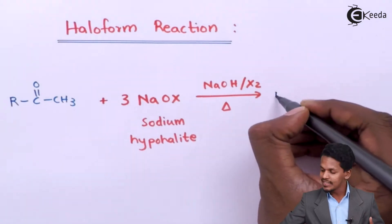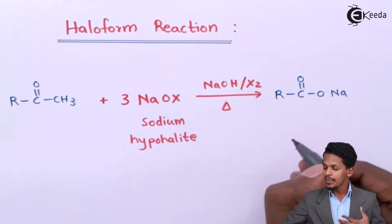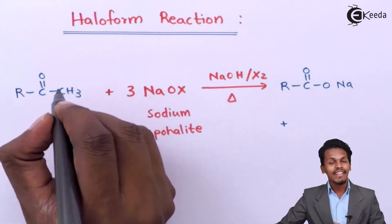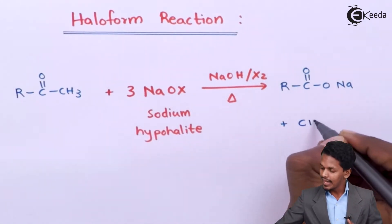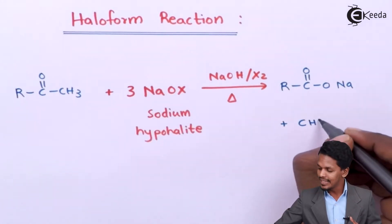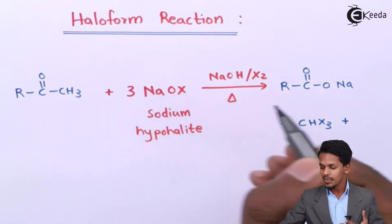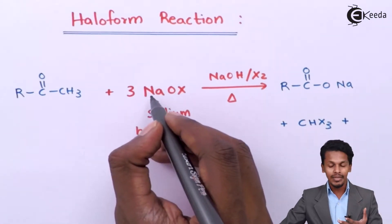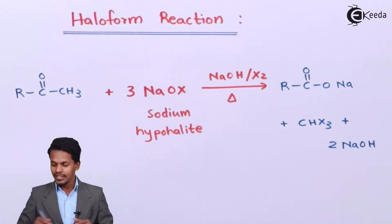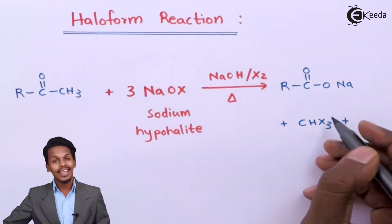That is how we see the reaction proceed to give the following products: R C double bond O ONa, which is nothing but the sodium salt of the carboxylic acid. The CH3 group is converted into CX3, since three moles of X are present. The two remaining moles of sodium are removed in the form of two moles of NaOH. So in this reaction we get the sodium salt of carboxylic acid and also a haloform.